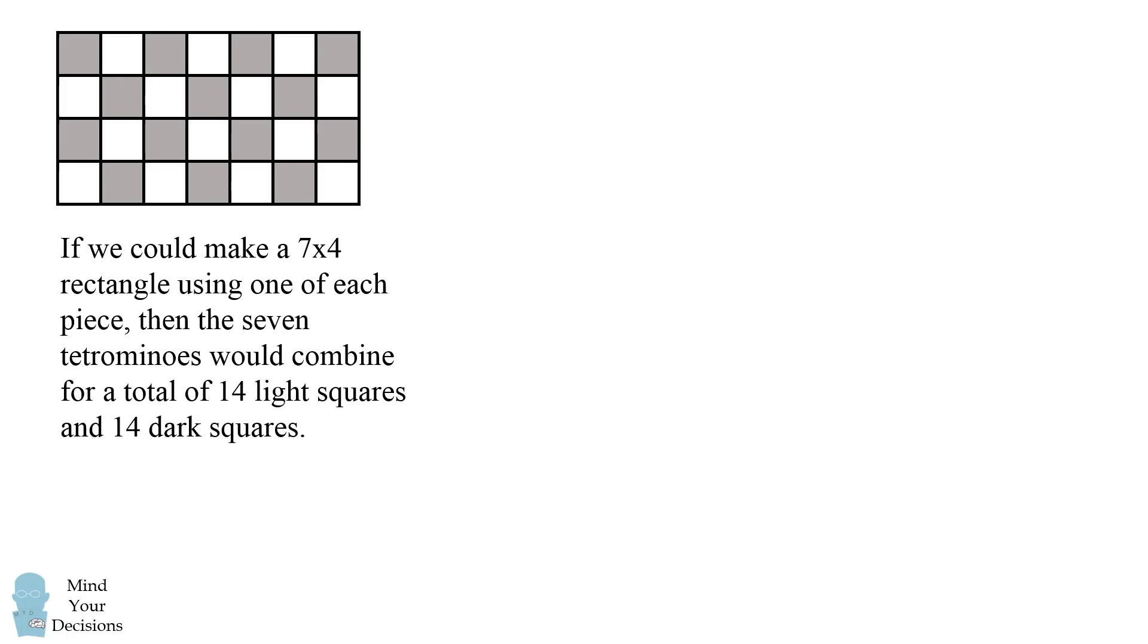So if we could make a seven by four rectangle using one of each piece, then the seven tetrominoes would combine for a total of 14 light squares and 14 dark squares.